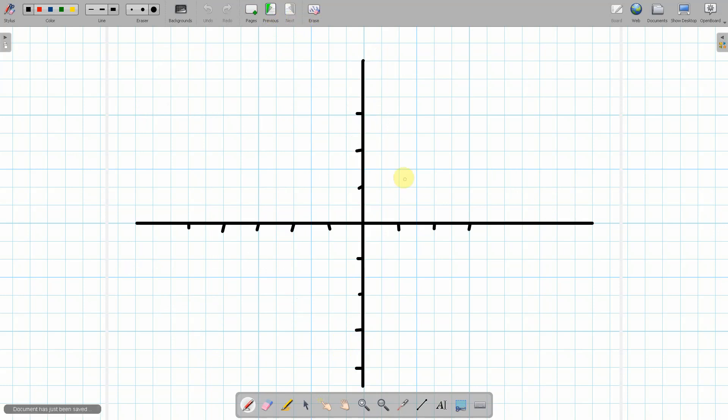Now it asks us to sketch the graph. So we need to create a plot. So we'll have the y-axis, the x-axis, and then this is 1, 2, 3. We call this minus 1, minus 2, minus 3, minus 4. This will be minus 1, minus 2, minus 3, and minus 4. And this will be 1, 2, 3.